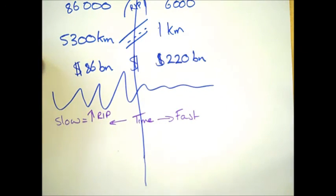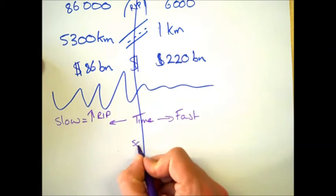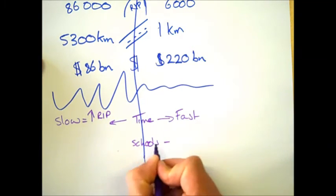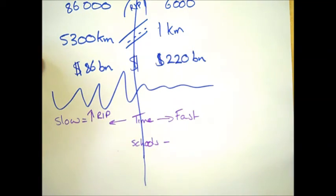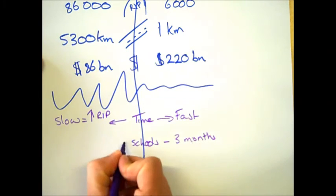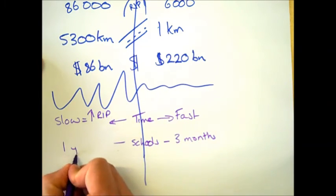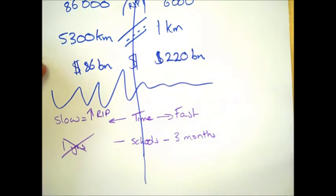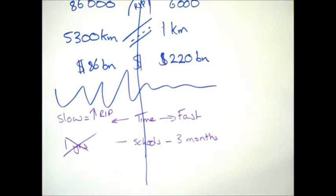Another nice example of the speed in which they responded is if we look at schools. In Kobe, money was put into rebuilding public services very quickly, so schools were reopened within three months. However, in Sichuan, a year later they were still shut, which meant that children in Sichuan missed out on a huge amount of their education.